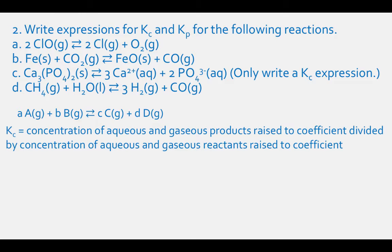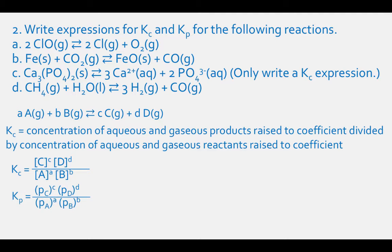Problem 2: Write expressions for Kc and Kp. Kc will equal the concentration of only the aqueous or gaseous products raised to their coefficients in the balanced equation, divided by the concentration of only the aqueous or gaseous reactants raised to their coefficients. Kp will equal the partial pressure of C raised to the power of c times the partial pressure of D raised to the power of d, divided by the partial pressure of A raised to the power of a times the partial pressure of B raised to the power of b.